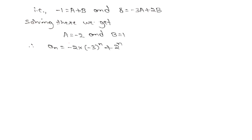Therefore, substituting the values A equals minus 2 and B equals 1 into the solution, we obtain the final solution An equals minus 2·(minus 3) to the power n plus 1·2 to the power n. This is our solution.